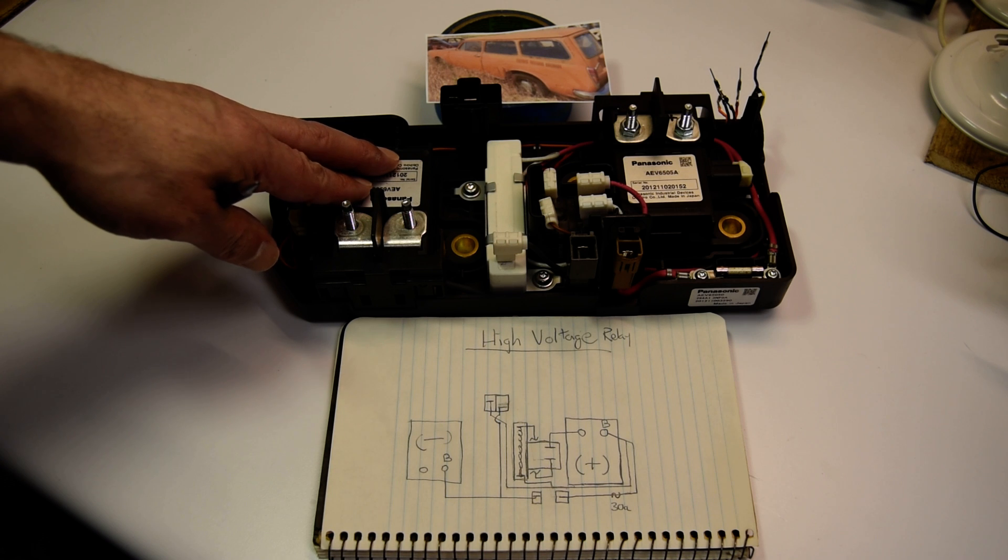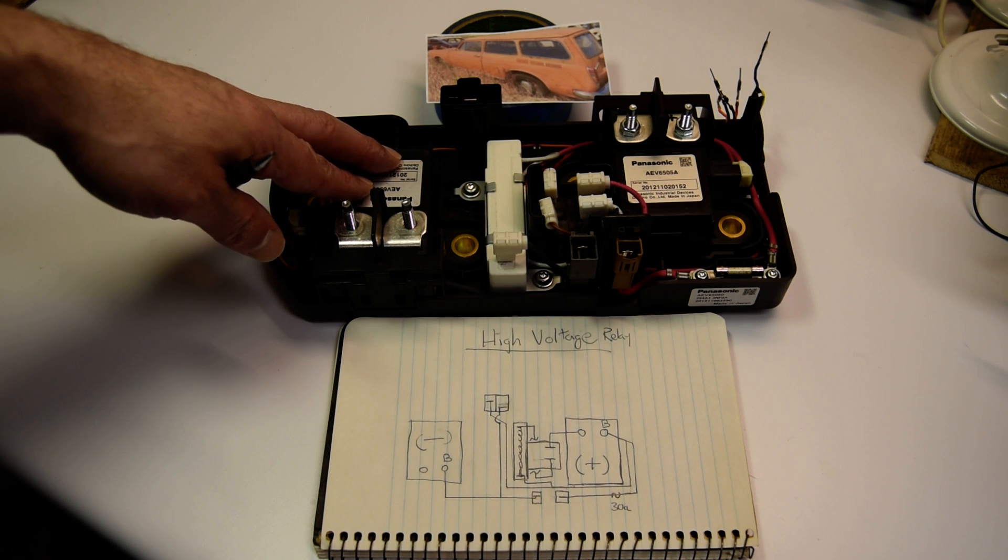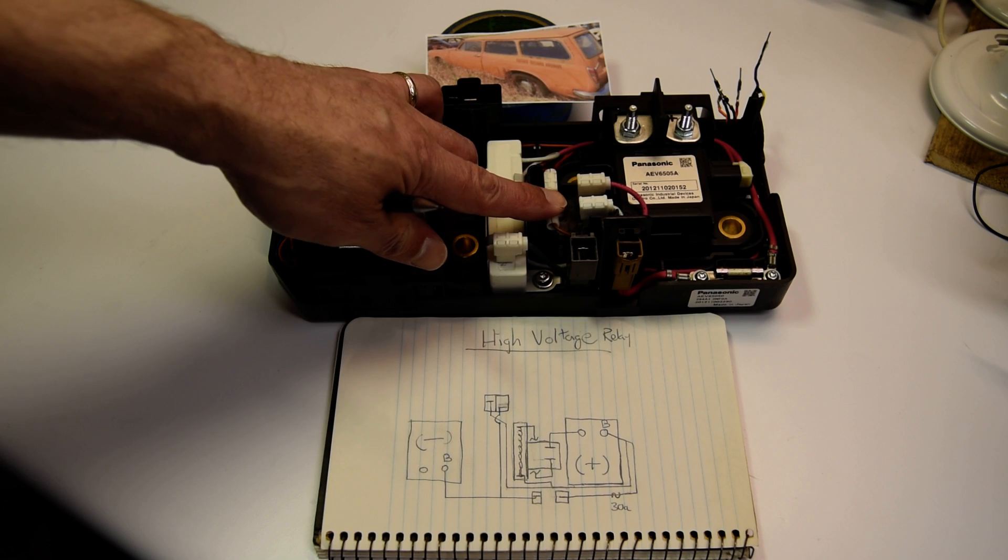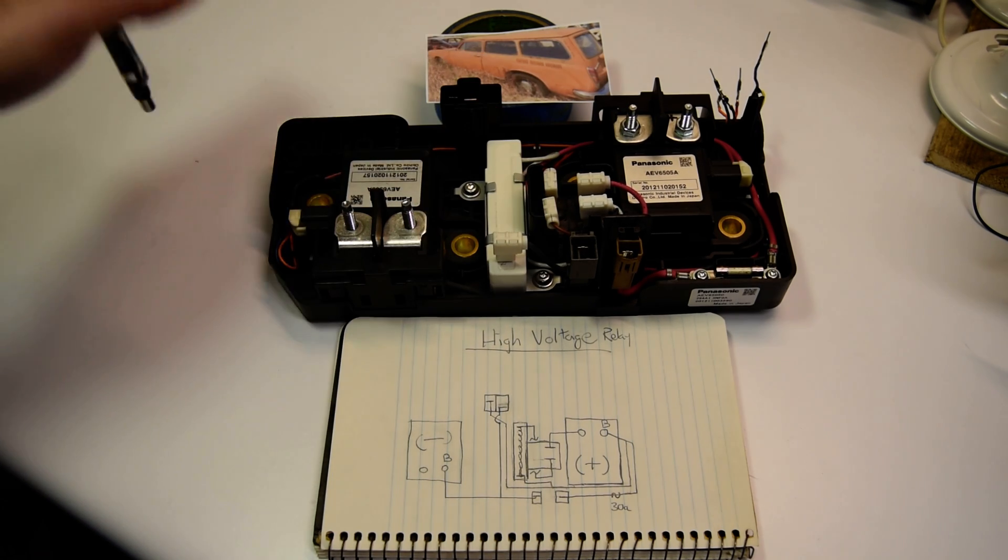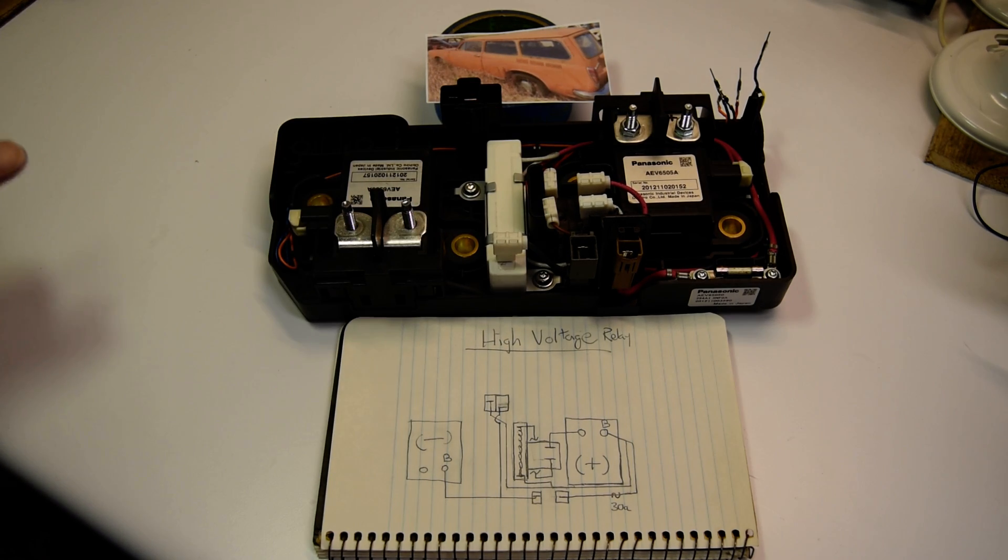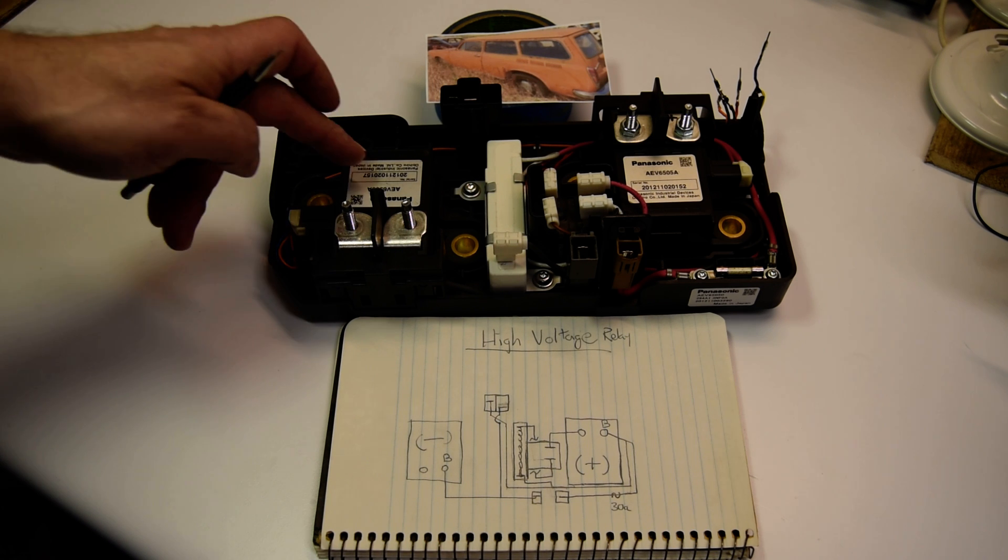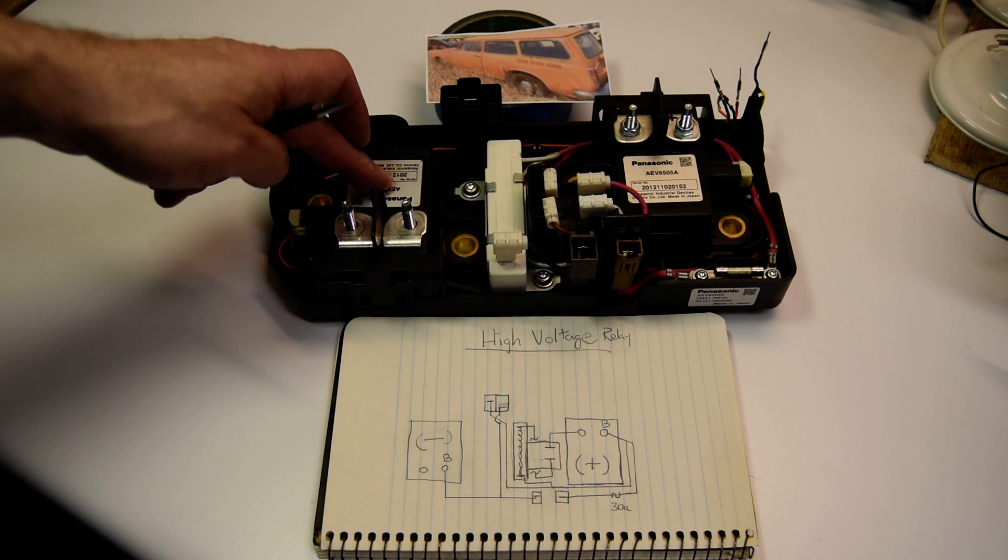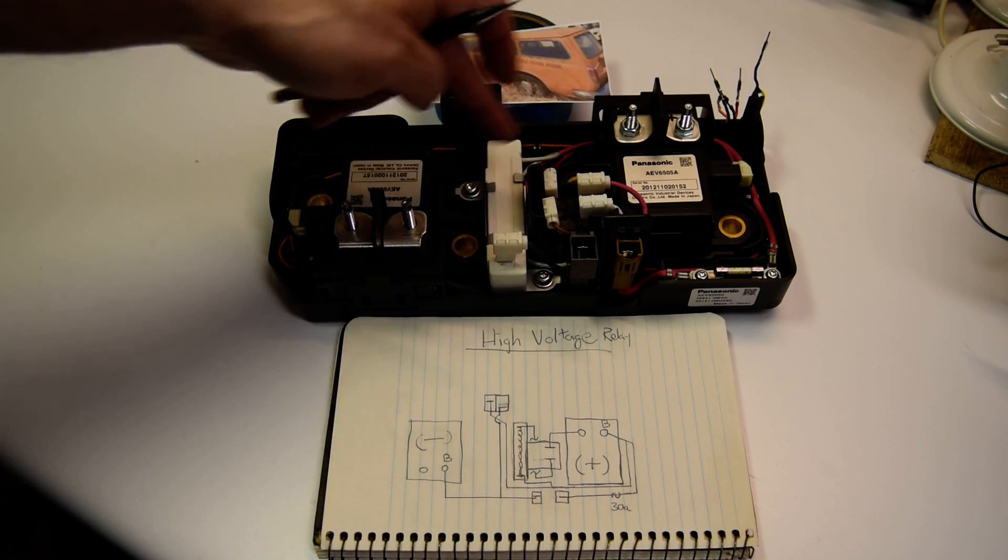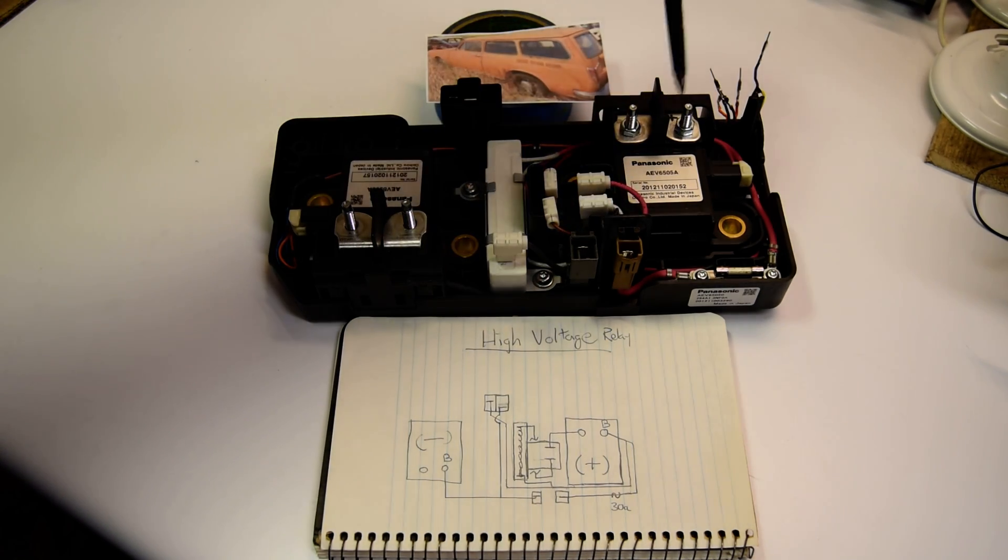This is a Nissan Leaf high voltage relay, I'm not sure which generation. They also call it the main relay I guess. This is the negative relay, this is the positive relay, I have this one marked right here.